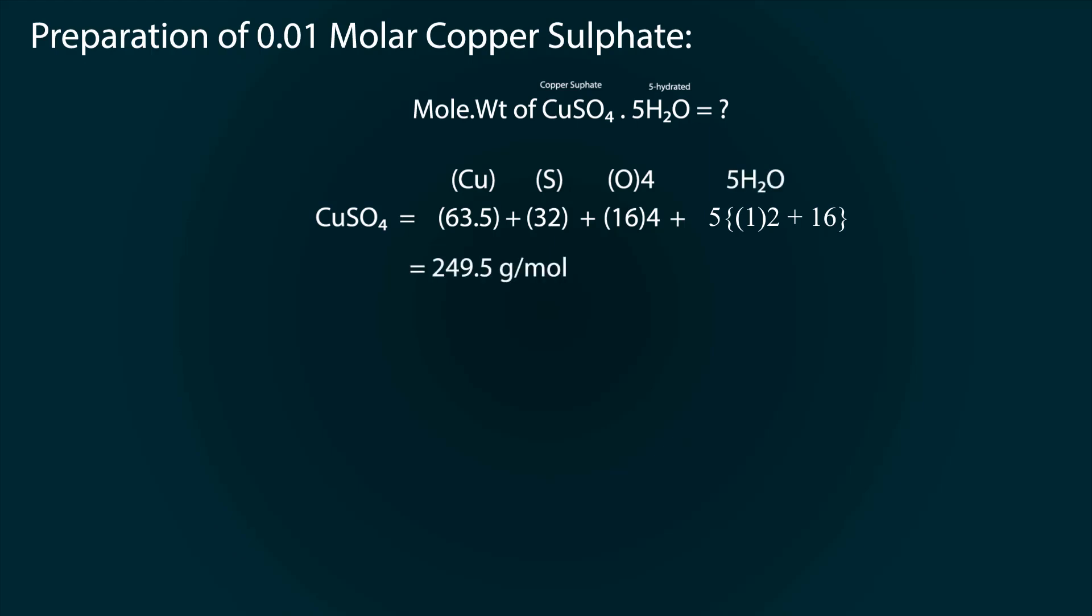After calculation we have 249.5 gram per mole. We know that the formula of molarity is number of gram moles divided by volume of solution in 1 cubic decimeter.